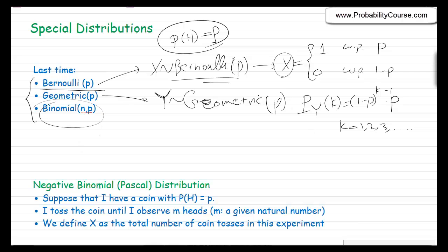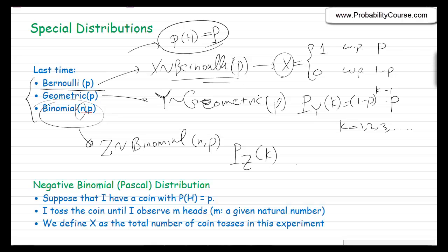Finally, we talked about Binomial(n, p). Consider the same coin — toss it n times, where n is a parameter. z is the total number of heads observed. So z ~ Binomial(n, p), and P(z = k) = C(n, k) · p^k · (1 − p)^(n−k), where k could be 0, 1, up to n.